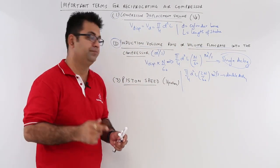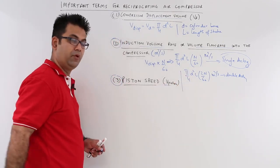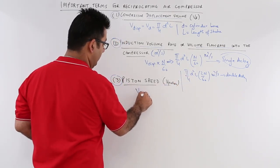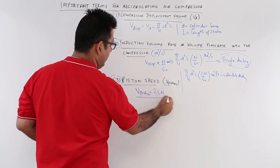The last very important term is piston speed, that is V_piston. And V_piston has a very straightforward formula which is 2 × length of stroke × rpm.